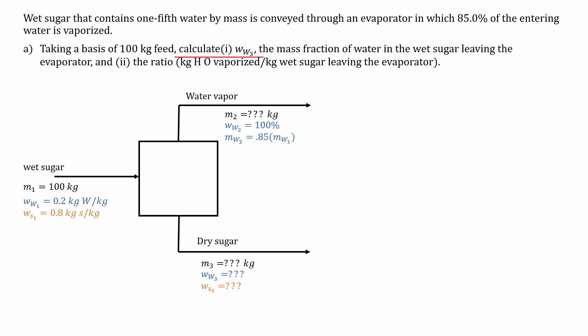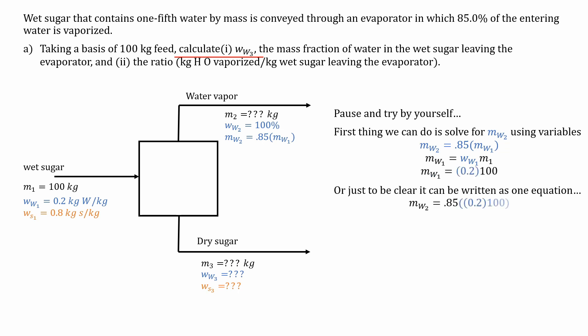Now, we have to calculate the mass fraction of water and the wet sugar leaving the evaporator. So if you haven't got this far, pause and try it by yourself again. The first thing we can do is solve for the mass of the water in the second stream using the variables. Plugging in the variables, we have the mass fraction of water in the first stream times the mass of the first stream. Or just to be clear, we can write it as one large equation as such. This gives us an answer of 17 kg of water.